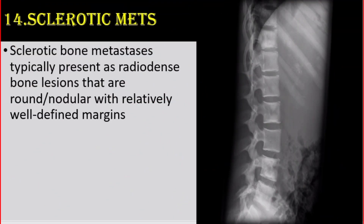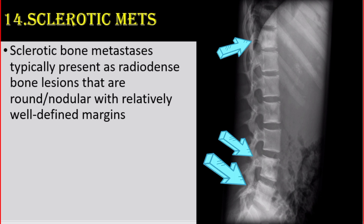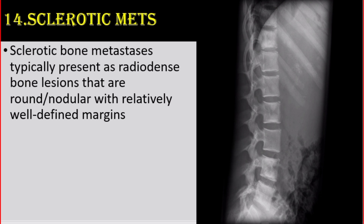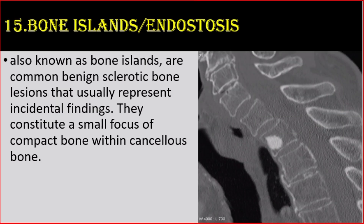Number 14: Sclerotic metastasis. Sclerotic bone metastases typically present as radio-dense bone lesions that are round or nodular with relatively well-defined margins. Number 15: Bone islands, or endostosis. They are common benign sclerotic bone lesions that usually represent incidental findings, constituting a small focus of compact bone within cancellous bone.